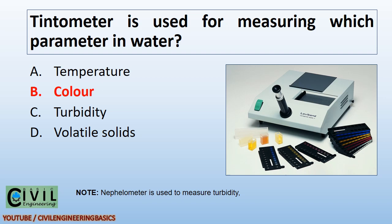Tintometer is used for measuring which parameter in water? Color. Note: nephilometer is used to measure turbidity.